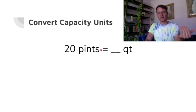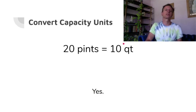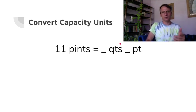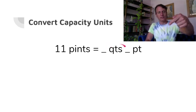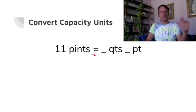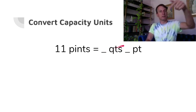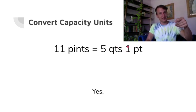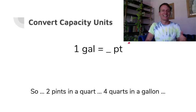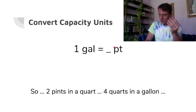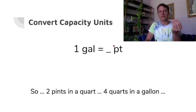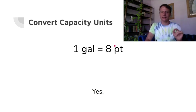Twenty pints divided by two gives ten quarts. Eleven pints: we can pull out five quarts with one left over — eleven divided by two is five remainder one. One gallon is how many pints? There are four quarts in a gallon, and each of those four quarts has two pints, so two times four is eight. Remember: eight pints in a gallon.